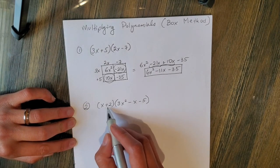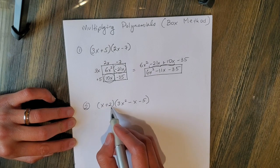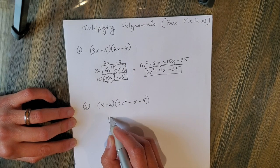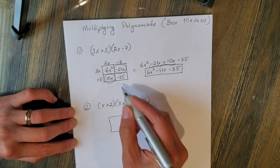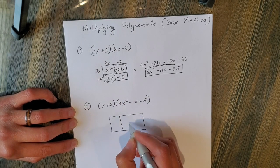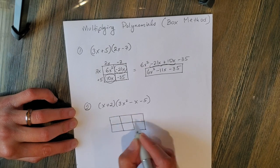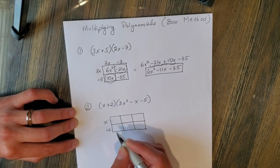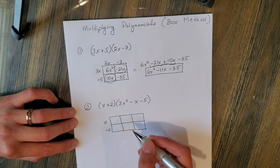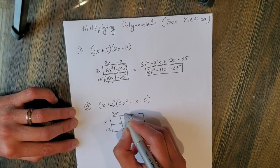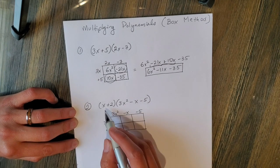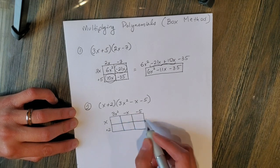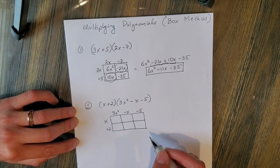Now let's look at this one — a two-term polynomial, which is a binomial, times a trinomial with three terms. That means I'm going to have a 2 by 3 box, which is a little bigger, with three columns and two rows. I'll write the polynomials along the side and top: 3x squared minus x minus 5, and let me double-check I didn't make a mistake.